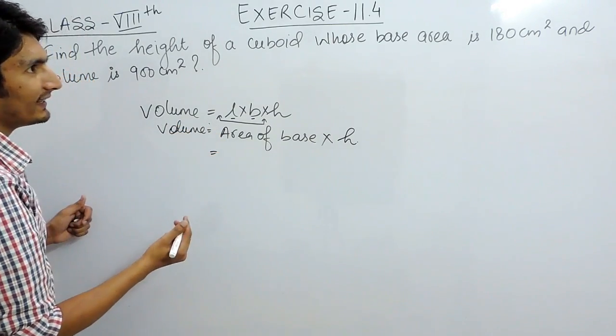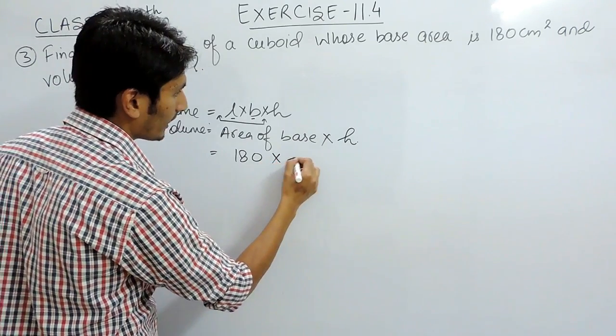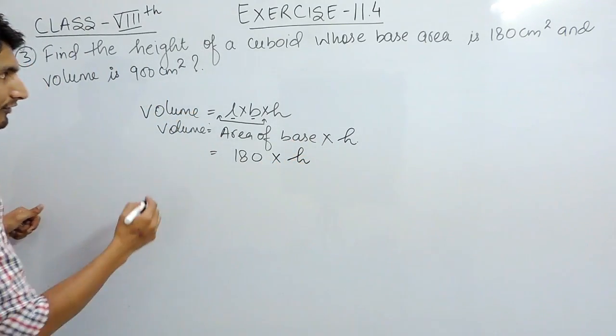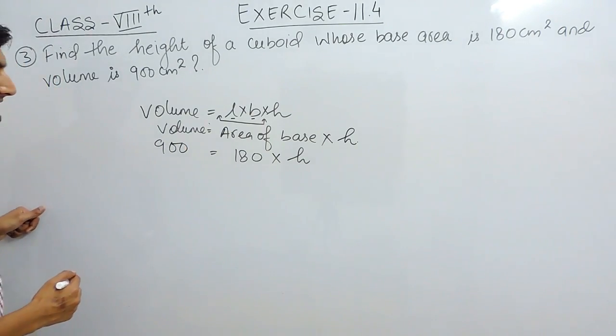So here the area of base is given as 180 cm², height you have to find, and volume is given as 900 cm³.